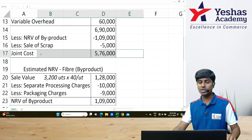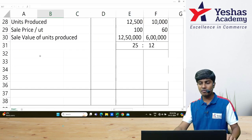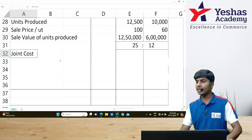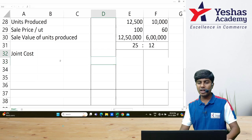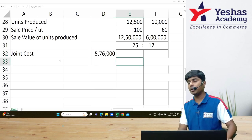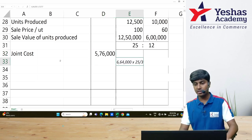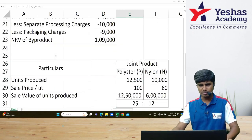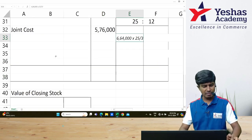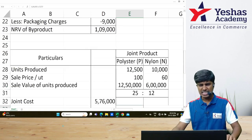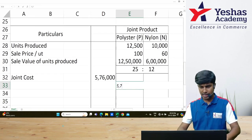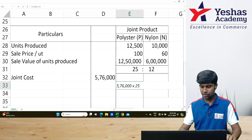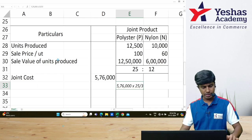How much is joint cost? ₹5,76,000. Let me allocate this in the ratio 25 is to 12. ₹5,76,000 divided—₹5,76,000 multiplied by 25 divided by 37. Correct.